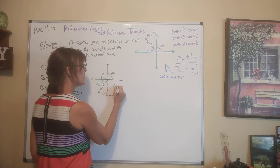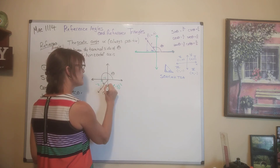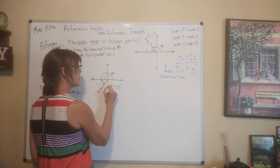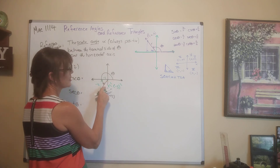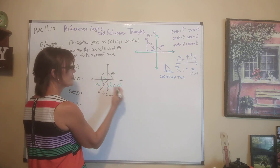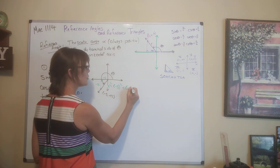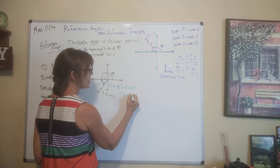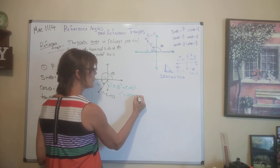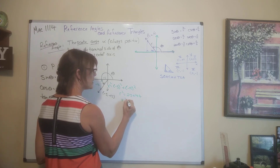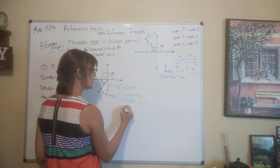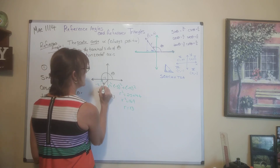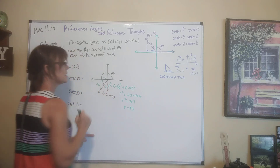Use the Pythagorean theorem: r squared equals negative 5 squared plus negative 12 squared. So r squared equals 25 plus 144, which is 169. Therefore r equals the square root of 169, which is 13.